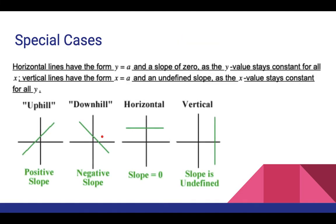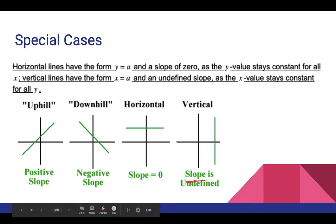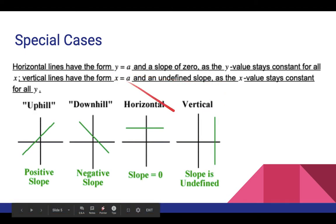Some special cases. If we have a horizontal line of y equals a, the horizontal line has a slope of 0, because when we have y equals a, the y value stays constant and thus never changes. So the slope is 0 for horizontal lines of the form y equals a. For vertical lines, we have an infinite change in y for 0 change in x, so the slope is undefined for vertical lines, which have the form x equals a.